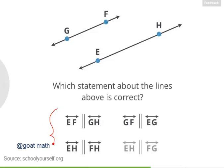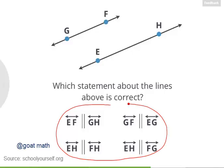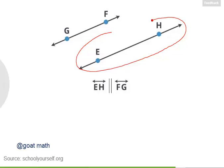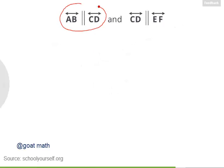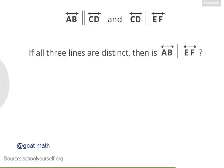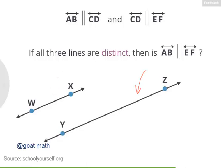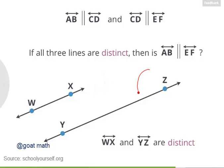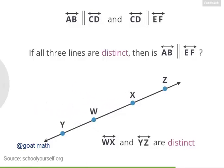So for these two lines, which of these statements down here is correct? Make sure you give each of these letters a careful look. Exactly, this is line EH, and this is line FG, and they're parallel. One last question: suppose I tell you that line AB is parallel to line CD, and that line CD is then parallel to line EF. If all three lines are distinct, then is AB parallel to EF? So before you answer this, let's say what we mean by distinct. Suppose we have parallel lines WX and YZ. These lines are distinct, meaning they're different lines. They may be parallel, but WX is over here while YZ is over here.